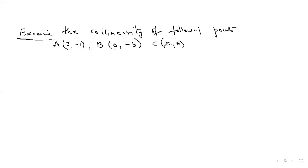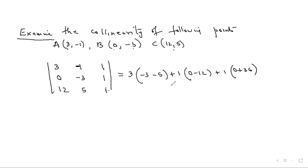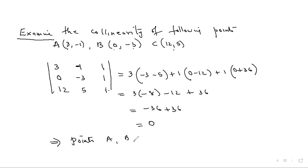To check if points A(3,−1), B(0,−3), C(12,5) are collinear, calculate the determinant |3 −1 1 / 0 −3 1 / 12 5 1|. Expanding: 3×(−3−5) + 1×(0−12) + 1×(0+36) = 3×(−8) − 12 + 36 = −24 − 12 + 36 = 0. Since the determinant is 0, the three points A, B, C are collinear.